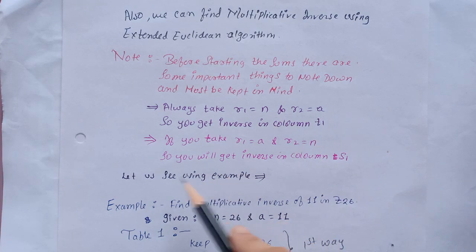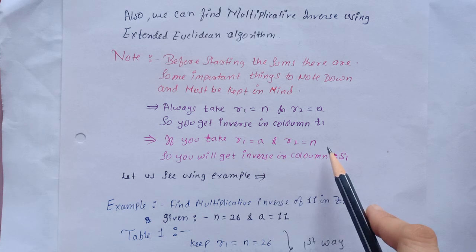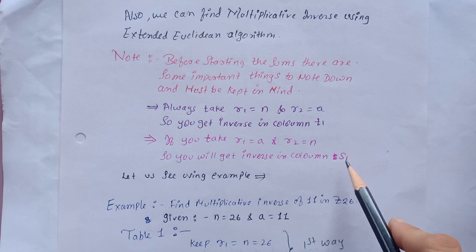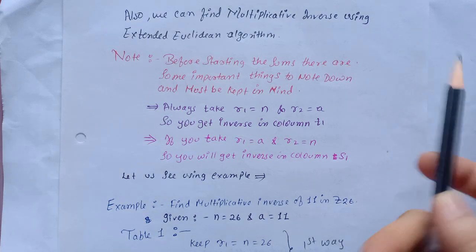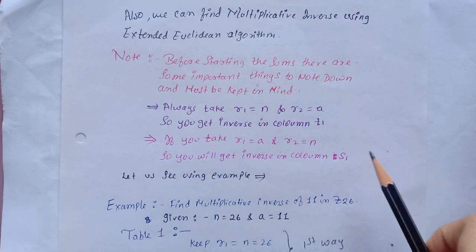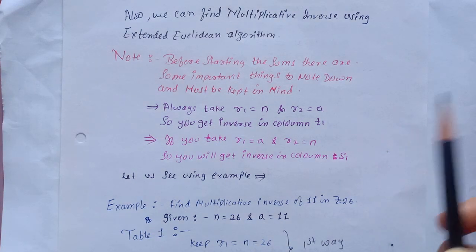If you invert that, like if you take r1 equal to a and r2 equal to n, you will get inverse in column s1. Those who haven't seen the Extended Euclidean algorithm, please watch the video. In my first video I explained the Extended Euclidean algorithm so it will help you better understand this.